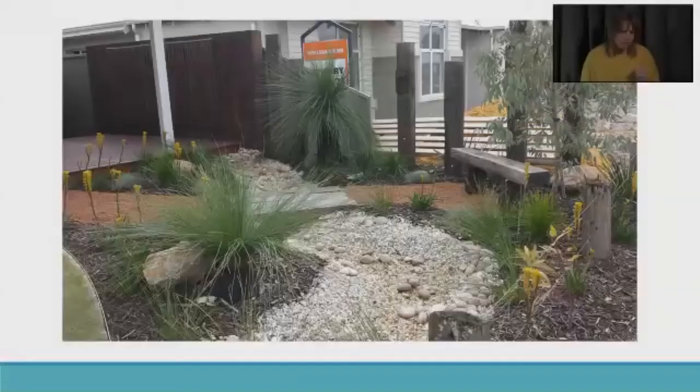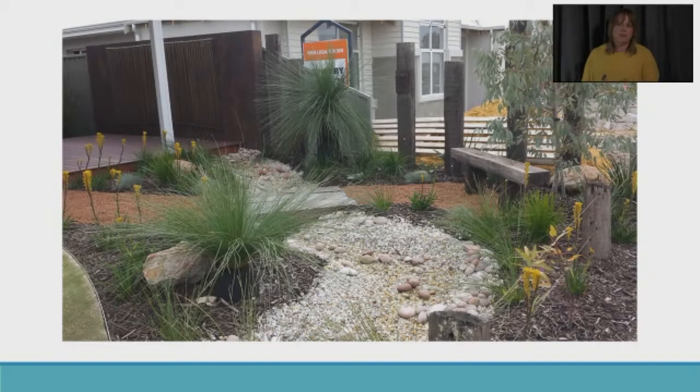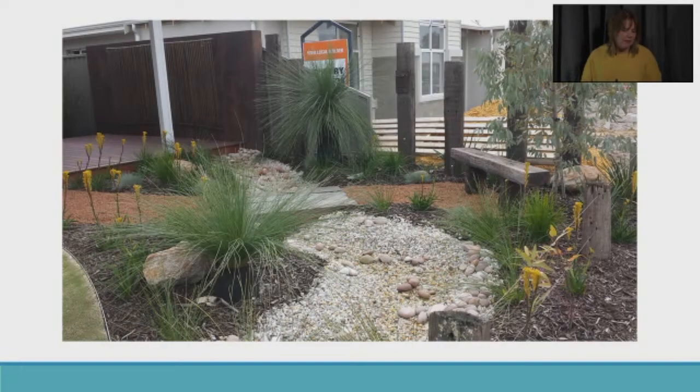A contemporary Australian garden can incorporate grass trees for drama, kangaroo paws for pops of color, a bench seat to draw the eye, and vertical posts to arrest the view. Different textures and materials — gravel, chunky bark, stone, a dry creek bed, even a bridge — add lots of appealing elements to the design.